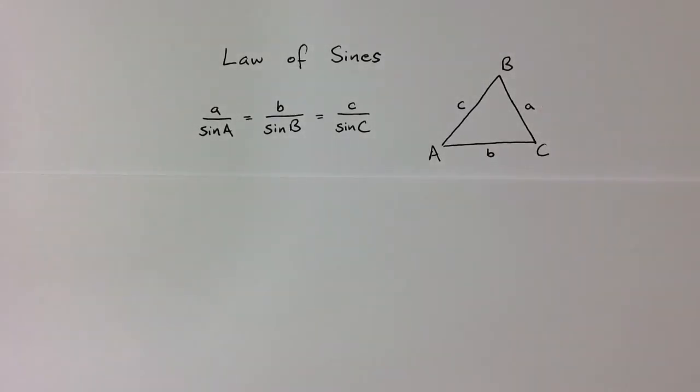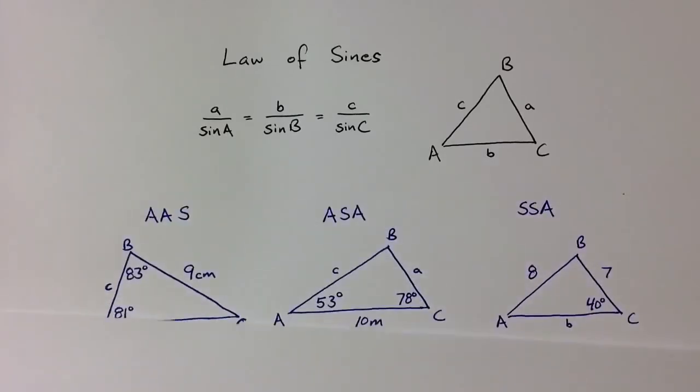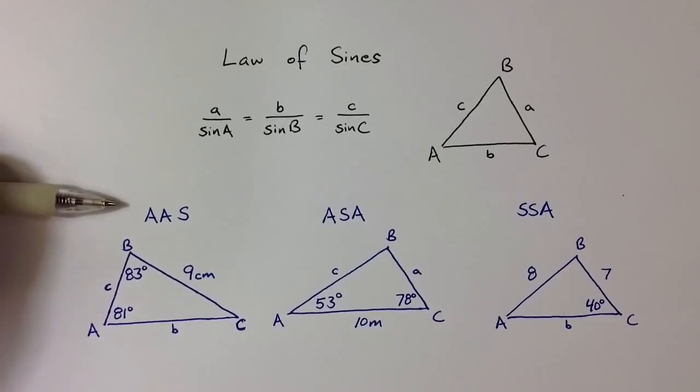The law of sines can help us solve triangles when the given information is in three specific forms. If we're given two angles and one side, that information can be arranged in an angle-angle-side orientation where I'm given two angle measures and then the side length opposite one of those angles.